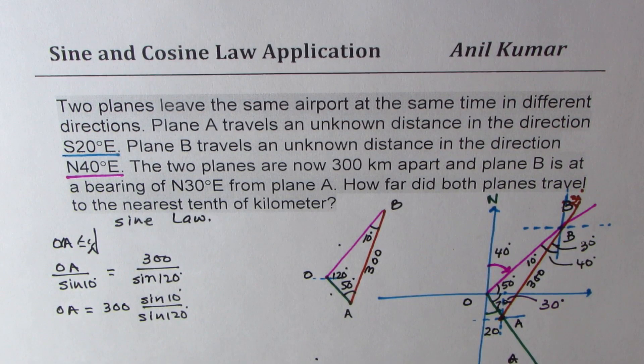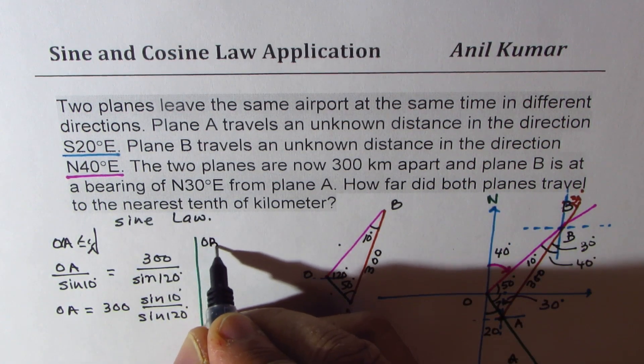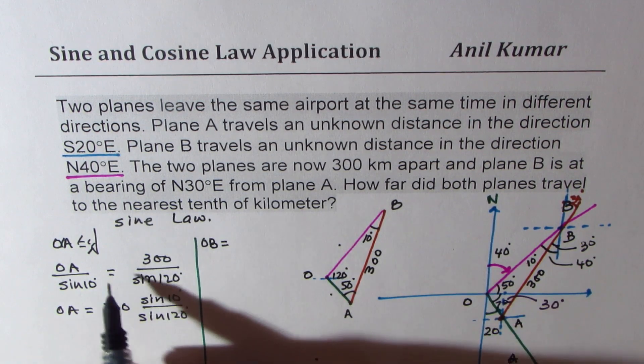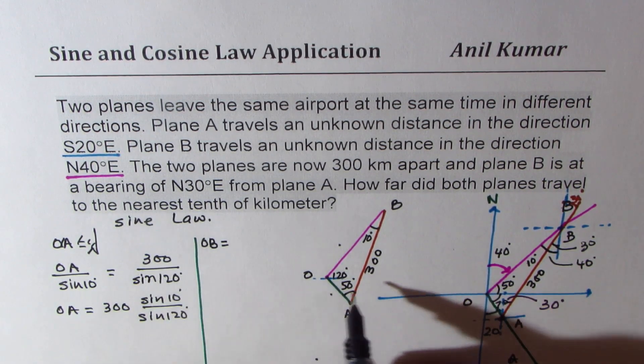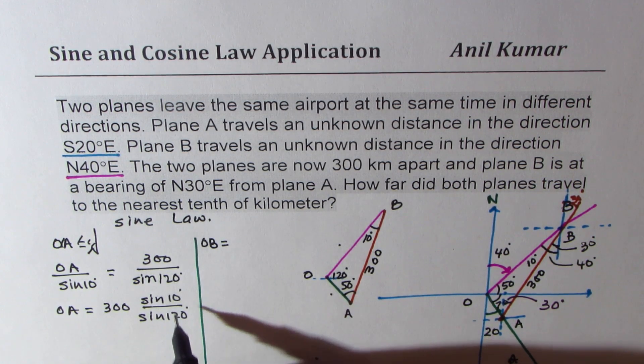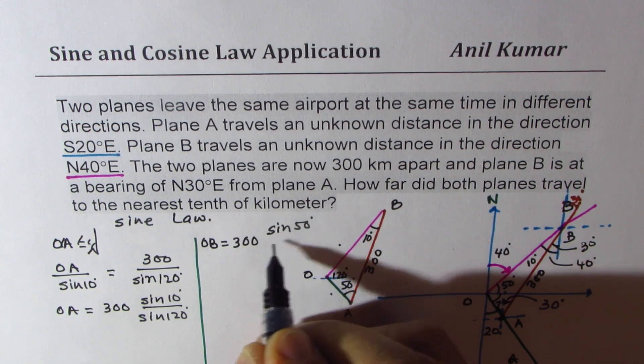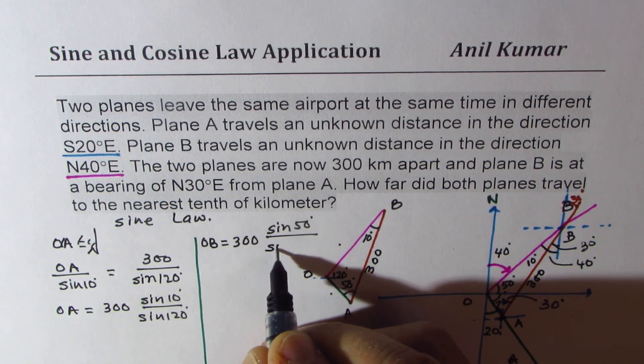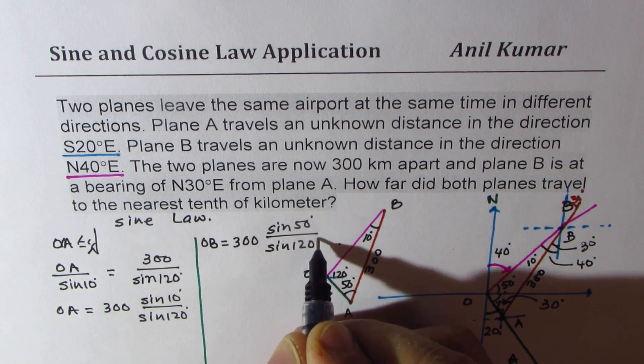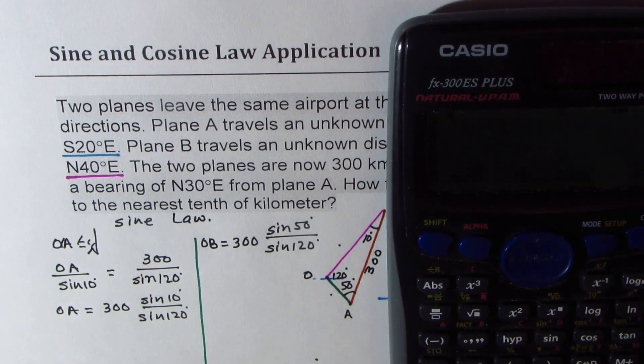So we get one answer. The other one, we could again use the same sine law and find what OB is. So OB will be equal to again the same ratio. So OB over, now angle opposite to OB is 50 degrees. So I will replace 10 with 50 degrees and write this as 300 times sine of 50 degrees divided by sine of 120 degrees. Is that clear? So let's just use calculator to find the answer.